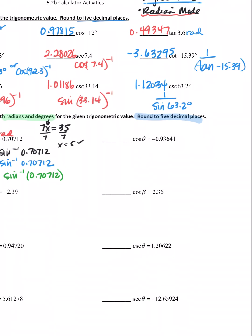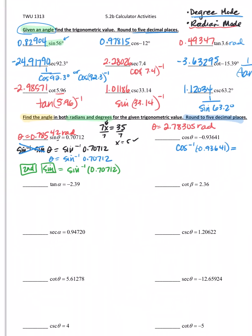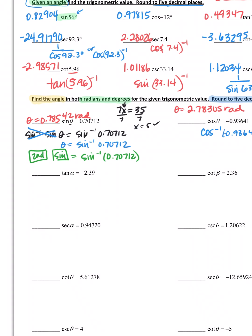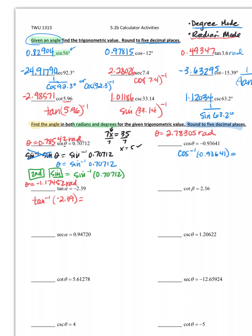The same thing on this one would be the inverse cosine of negative 0.93641. I would put that in my calculator and in radian mode I come up with 2.78305 radians. I'm going to jump down here - tangent inverse tangent of negative 2.39. In radian mode I end up with negative 1.17452 radians.